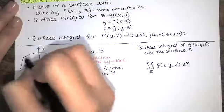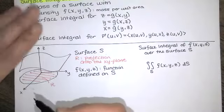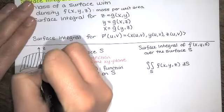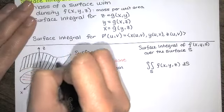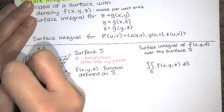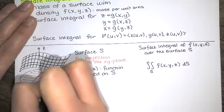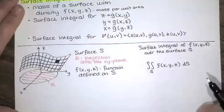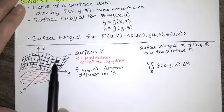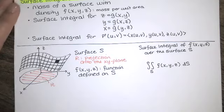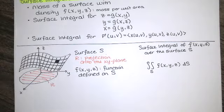Rather than integrating over a region in the xy-plane, we take our surface and subdivide it into a bunch of little pieces. On each little piece, our integrand f(x, y, z) is approximately constant. So we evaluate f at a point (x_i, y_i, z_i), multiply it by the surface area of that little piece, and add all of those together to get the surface integral. This is our definition of a surface integral of a scalar function.